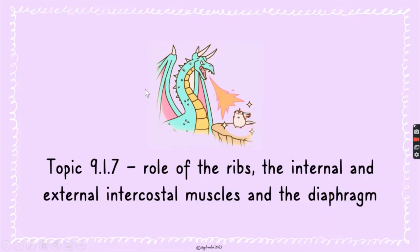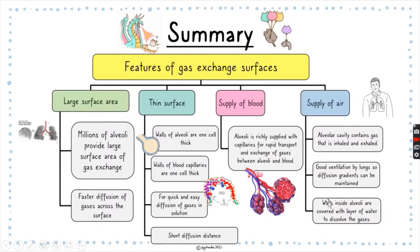Hi everyone, good morning. Today we are going to cover topic 9.1.7: the role of the ribs, the internal and external intercostal muscles, and the diaphragm. Before we get into that, let's do a summary of our previous lesson.